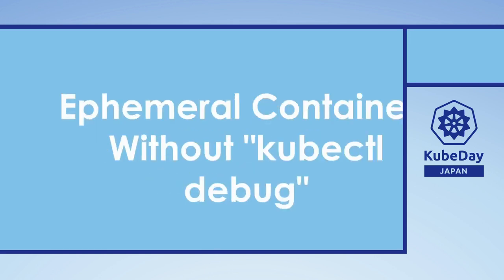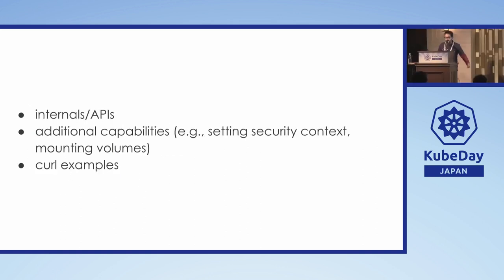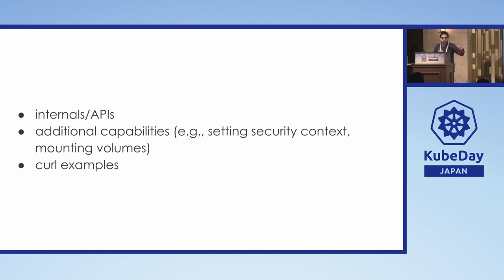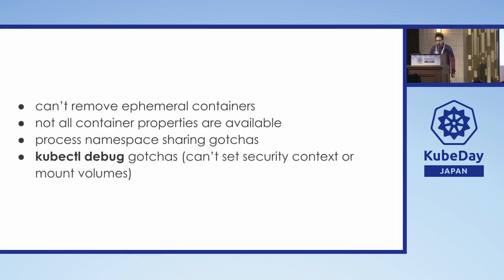You can also use ephemeral containers without kubectl debug by using the internal Kubernetes APIs directly. That's useful because there's a demo showing how to set a security context — if you need to set a security context or additional volume mounts, which you can't do by default with kubectl debug, you use the API with curl. Some gotchas: you can't remove ephemeral containers, not all container properties are available, and process namespace sharing, security context, and volume mounting are not available out of the box with kubectl debug.